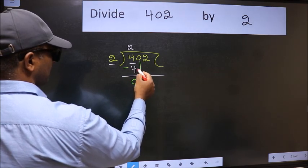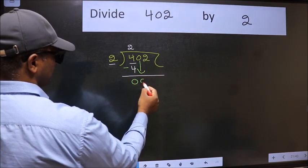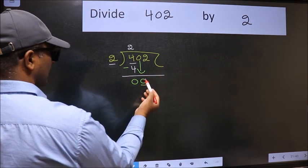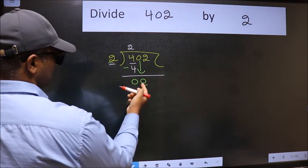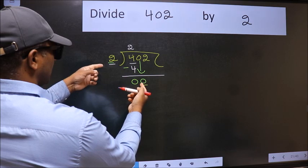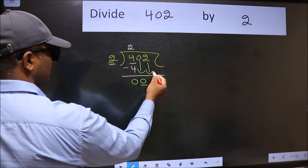After this, bring down the beside number. So 0 down. Here we have 0 and here 2. 0 is smaller than 2, so we should bring down the second number.